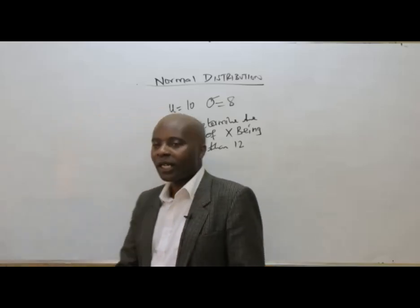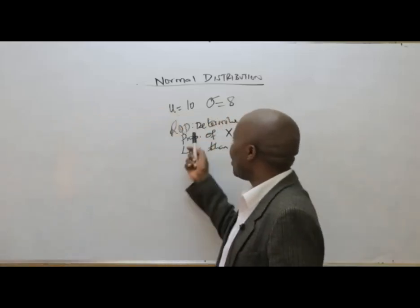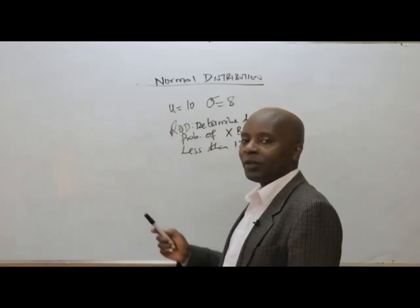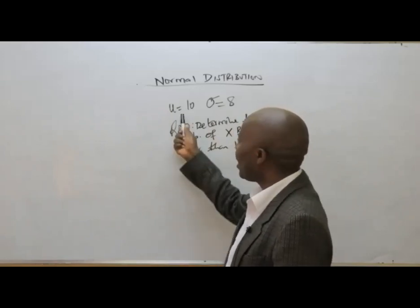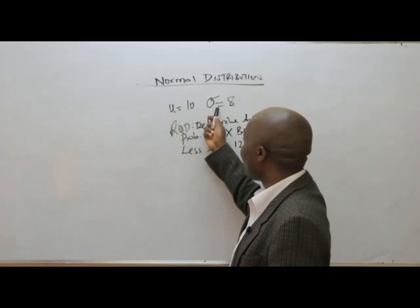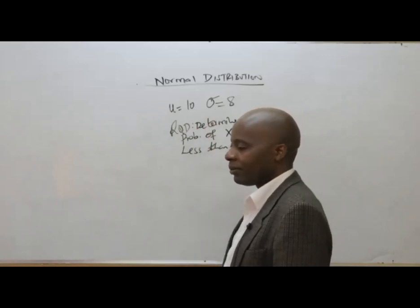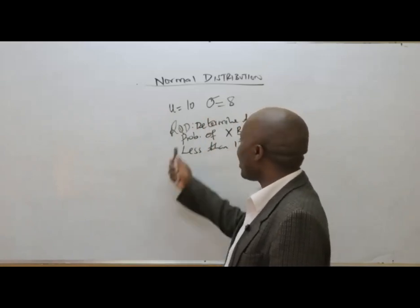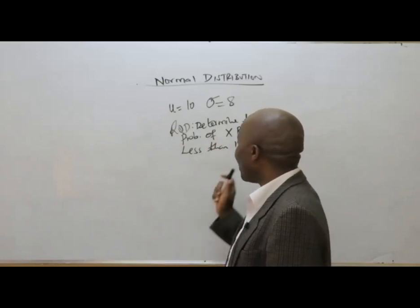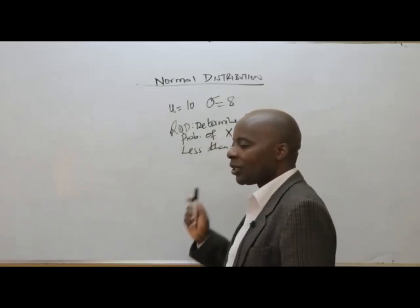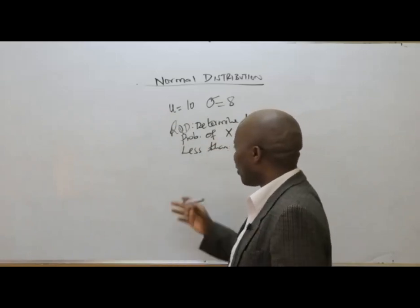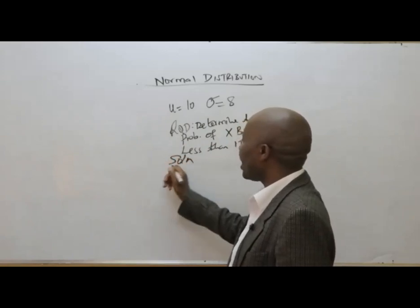What they want us to do here: they have given us a normal probability distribution, the mean which is 10, the standard deviation which is 8, and then they want us to determine the probability of X being less than 12.